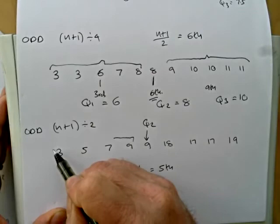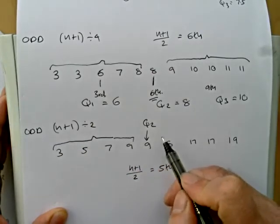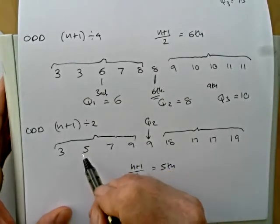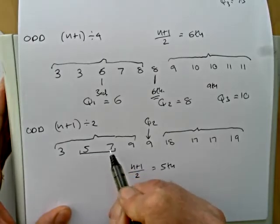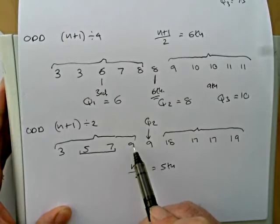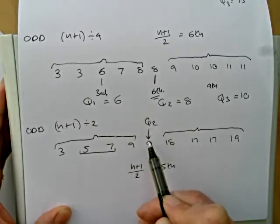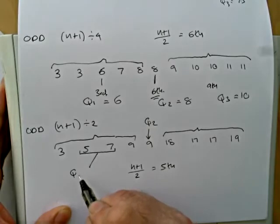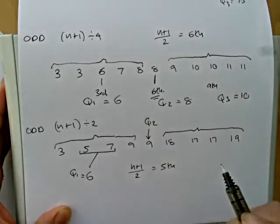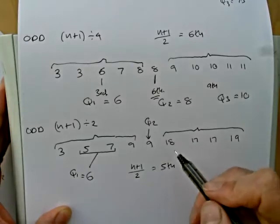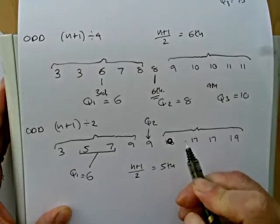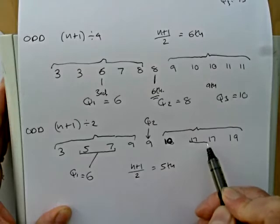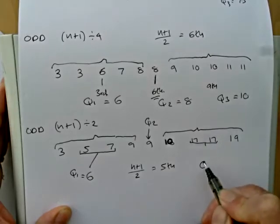But we now have an even number of numbers below our median and an even number above. So it's different from the example above. We find the median pair, which is 5 and 7. Q1 then is going to be the median of these numbers, which is the middle pair. 5 plus 7 divided by 2 is 6, so Q1 is 6. Now I actually put a number in there which I shouldn't have done. Let's just quickly change that to 10 so they're now in order.